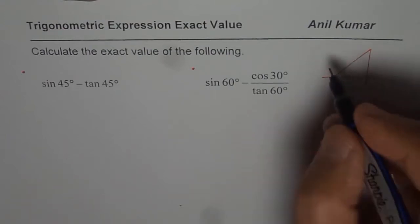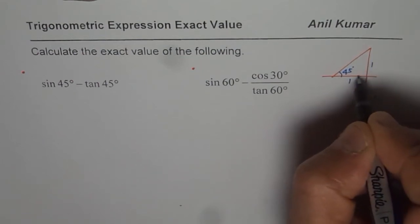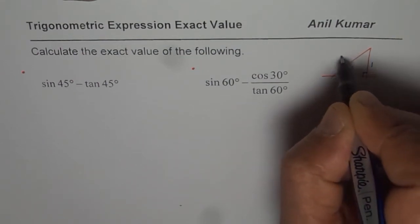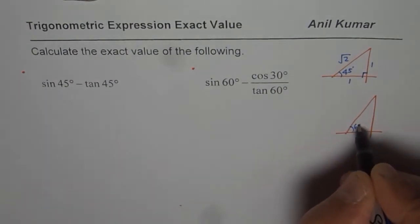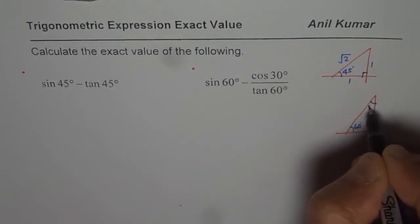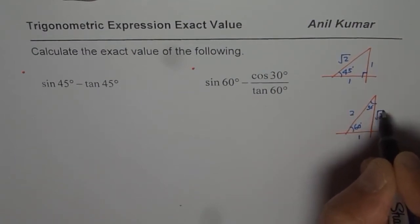So here we have 45 degrees. So the sides are equal, right? Then the square root 2 is your hypotenuse. In 30, 60 degrees triangle, the sides are 1, 2 and square root of 3. Correct?